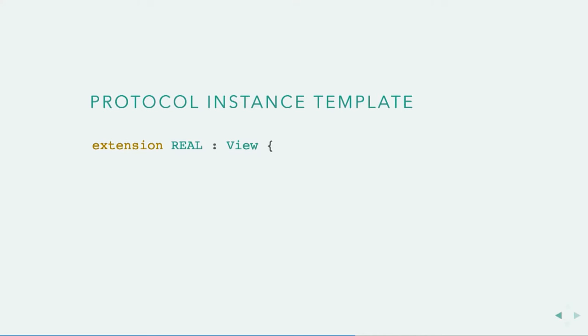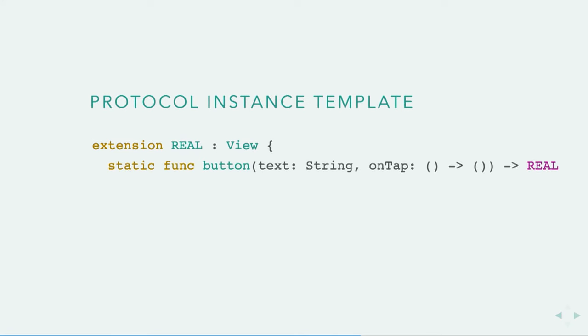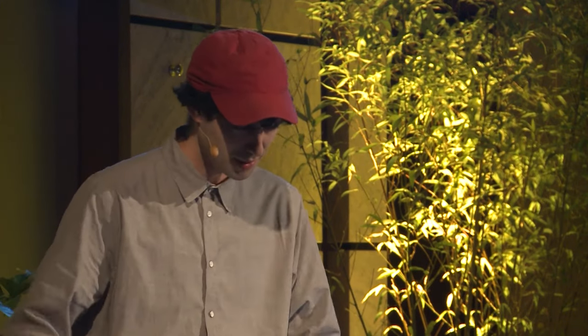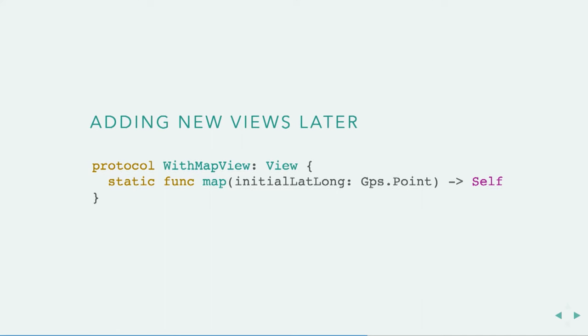If we want to look at what really happens when we conform to this protocol — I'll just show you. So 'Real' is our concrete thing, and Self gets replaced with the Real type everywhere. In button, it's the return type. In the stack view, it's in the recursive case and the return type. So how can we add new cases? We have a protocol, and protocols can be inherited in Swift.